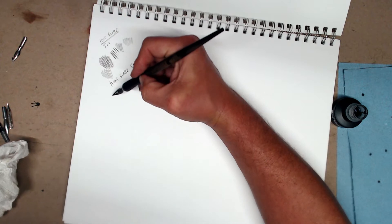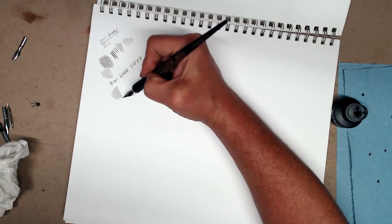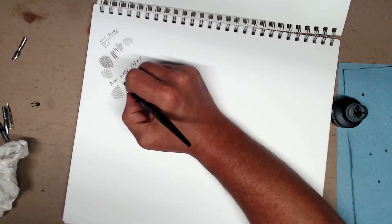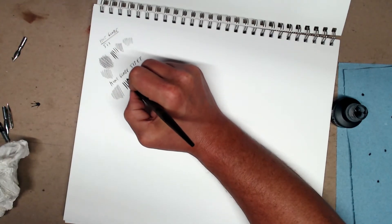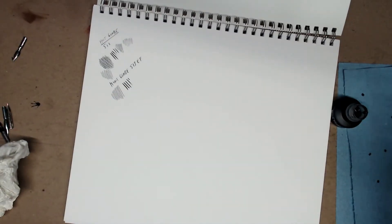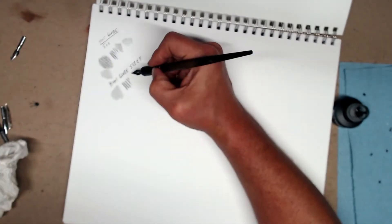This pen is also very, very smooth. Puts down a nice line with no pressure. And is a lot more flexible. Opens up a lot more than the 512. So you can put down a little bit more line variation with it. This pen also writes well in reverse. Let's take a look.